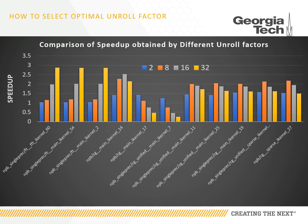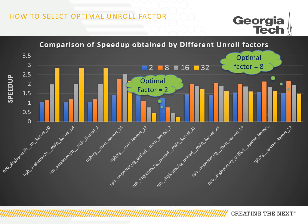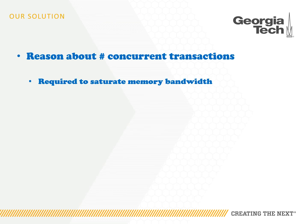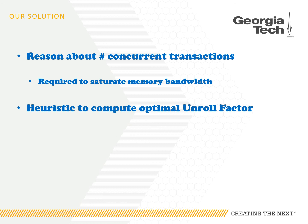But the main problem is how to select the optimal unroll factor. This chart shows the significant difference in achieved speedup between different unroll factors, and different kernels have different optimal unroll factors. In our paper, we reason about the number of concurrent transactions required to saturate the memory bandwidth and come up with heuristics to compute the optimal unroll factor. Please refer to our paper for more details.